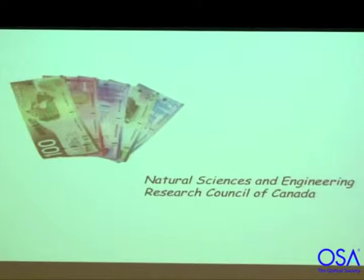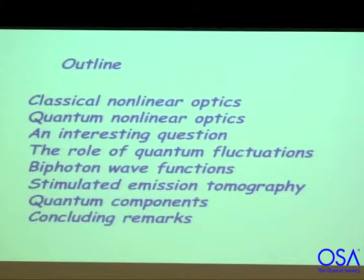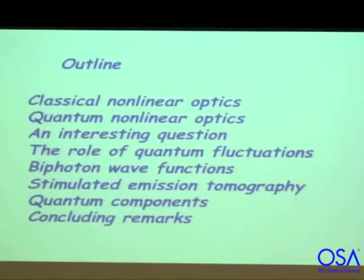Here's an outline of what I'm going to try to do. I'll talk a little bit about classical nonlinear optics, quantum nonlinear optics, and then how we might try to tie them together — how quantum fluctuations come in. I'll talk about entangled photon states, and then this thing called stimulated emission tomography that I'm very excited about. If I have time I'll talk about quantum components, but I may not get to that.